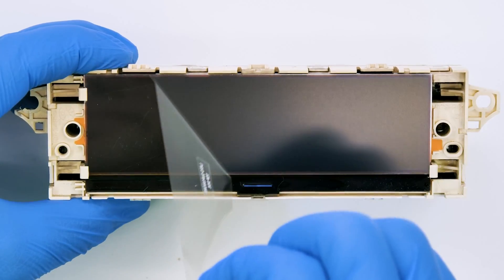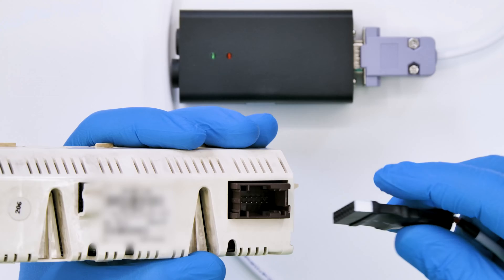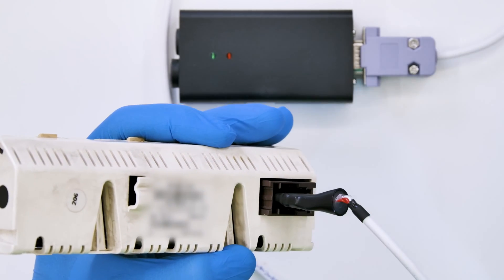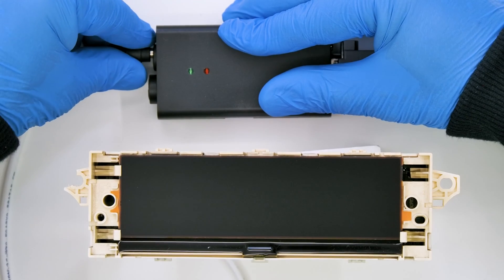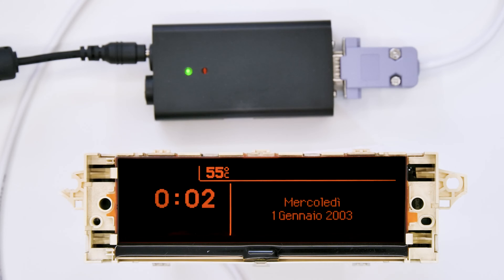Peel off the front protective film from the display. With the help of the MiniTools CAN BUS generator switch on the module. Perfetto! Problem solved! Thank you for choosing MiniTools.